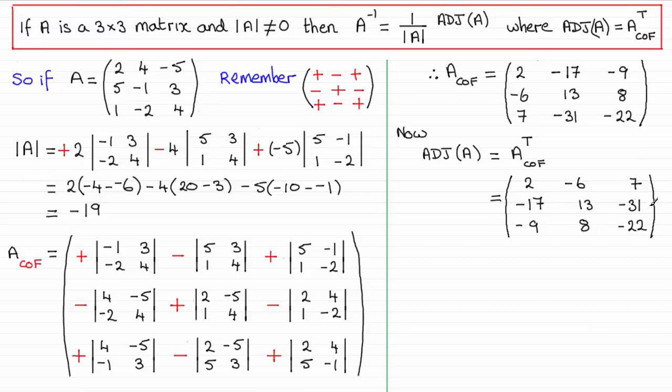So, essentially, we've got everything we need now to compile the inverse matrix of A. It's going to be 1 over that determinant, 1 over minus 19, multiplied with this matrix, the adjoint matrix of A. So, if you do that, this is the result that you'll get.